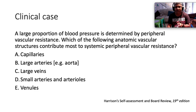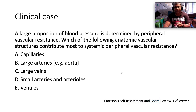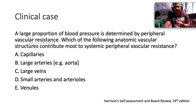Here is our clinical case. We state that a large proportion of blood pressure is determined by peripheral vascular resistance. Which of the following anatomical vascular structures contributes most to systemic peripheral vascular resistance? Is it (a) the capillaries, (b) the large arteries — the aorta, (c) the large veins, (d) the small arteries and arterioles, or (e) the venules?